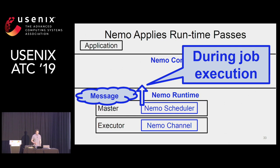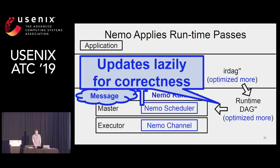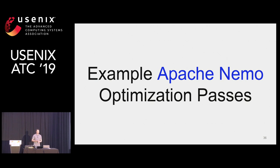Then come the runtime passes. During job execution, a message can be produced from the runtime and forwarded to the compiler to invoke a corresponding runtime pass to further optimize the IR DAG. Because the IR DAG and the runtime DAG are decoupled, we can lazily update the new runtime DAG to the existing running runtime DAG to ensure correctness.